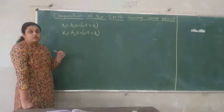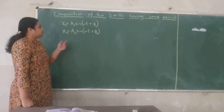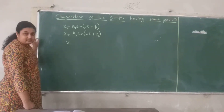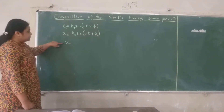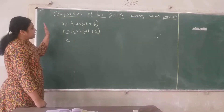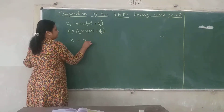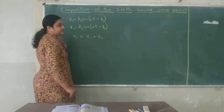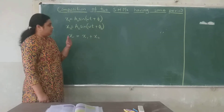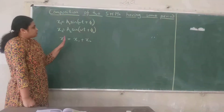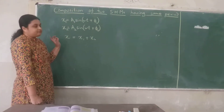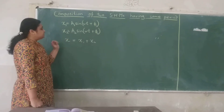We want to check what the resultant is going to be. Let me take the resultant displacement of a particle with time as X. This X is going to be the resultant of these two simple harmonic motions. They are along the same line and the same path, so I can just add them algebraically: X = X₁ + X₂. If they were in different directions I would use vector addition, but since they are along the same path it is just algebraic addition. That will give me the resultant displacement of a particle.